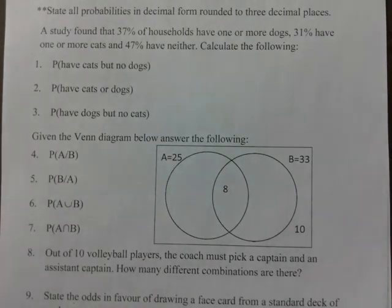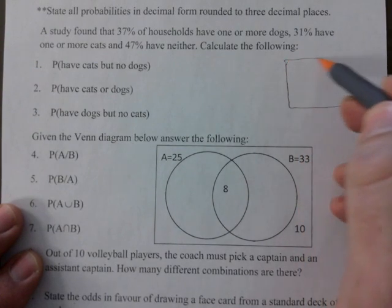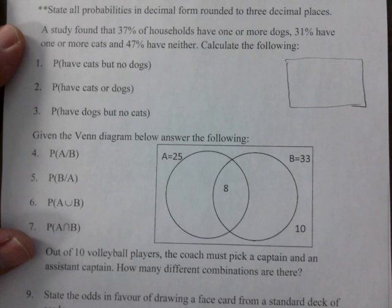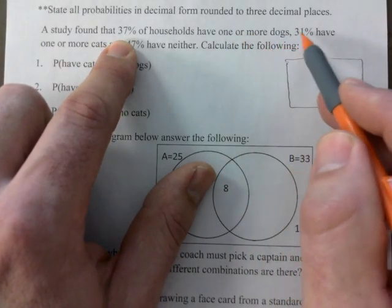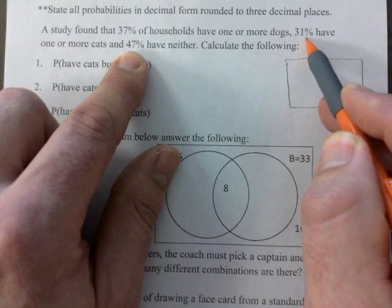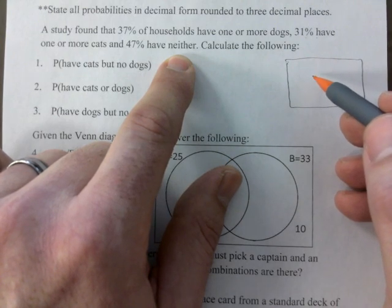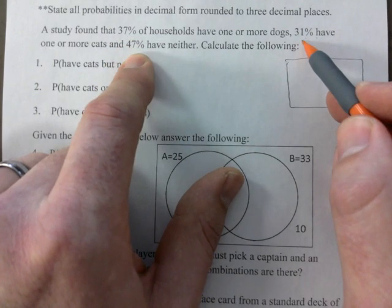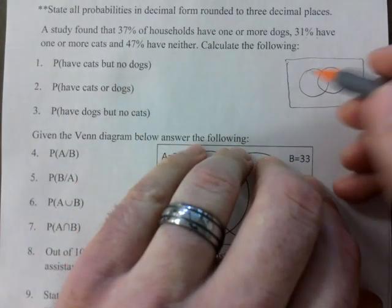Look what the cat dragged in. Leave the cats alone, alright. What I would do here - I'm debating whether I should just show you the answer key to make it quicker, but it's not the same. A study found that 37% of households have one or more dogs, 31% have one or more cats, and 47% have neither. There's a chance this is mutually exclusive, but when you check and add it up, it surpasses, it goes over 100%.